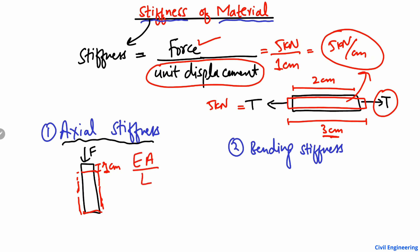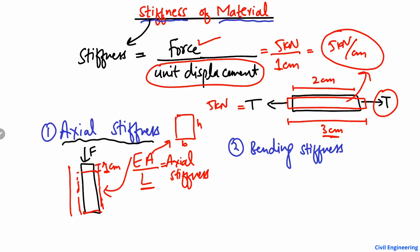Axial stiffness can be found using the formula: EA divided by L. This is the axial stiffness formula, mostly used for columns and trusses. Here, E is the modulus of elasticity of the material, A is the cross-sectional area of the column (width times height of the cross-section), and L is the length of the column.